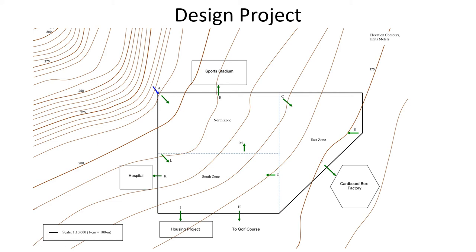If you count down by increments of 5 meters: 275, 270, 265, 260, 255, 250 — here is the 250-meter elevation line. This is a relatively steep hillside. When the contour lines are further apart, that's an indication that the slope isn't as steep. It's a scaled map, printed at 11 by 17 so you can measure to scale — one centimeter on the page represents 100 meters in this hypothetical development.